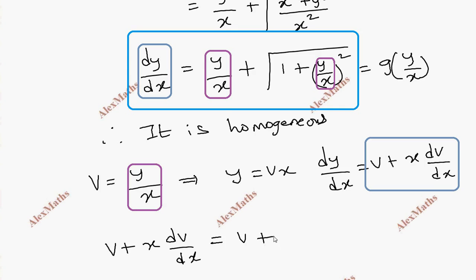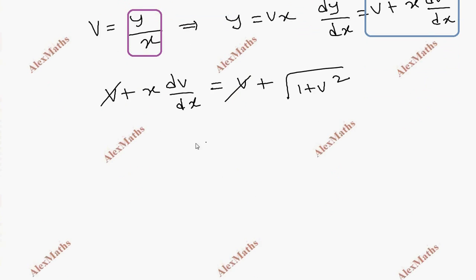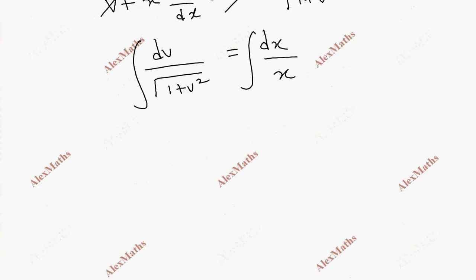So this is v plus root of 1 plus v squared. The v cancels. Variable separable: dv by root of 1 plus v squared equals dx by x.